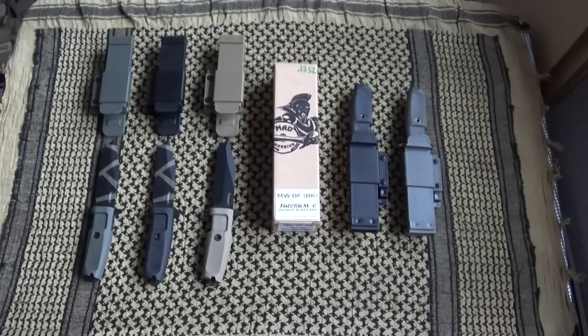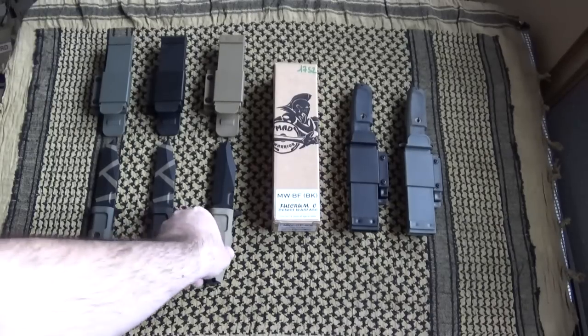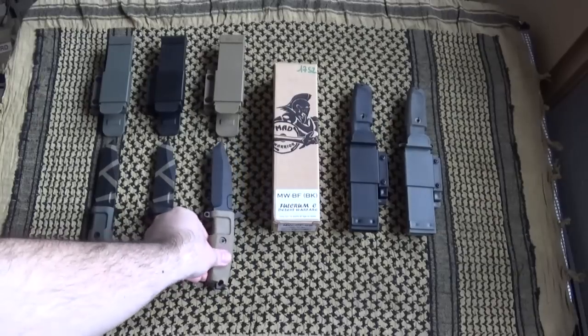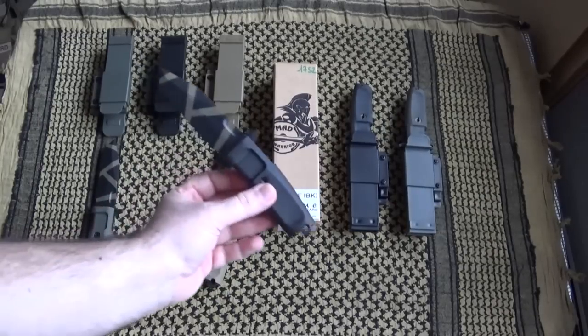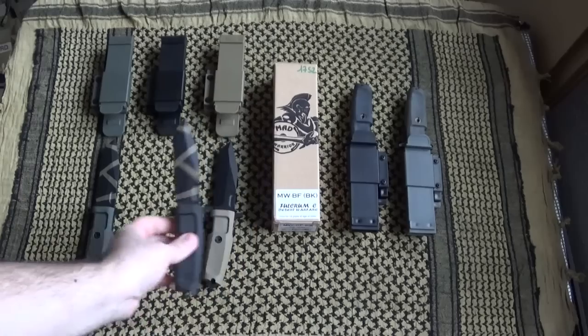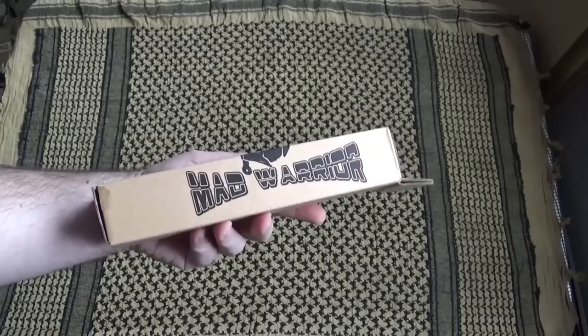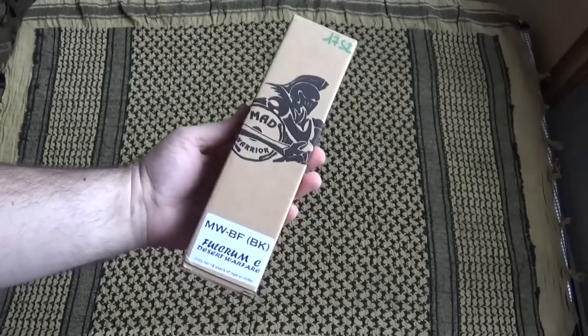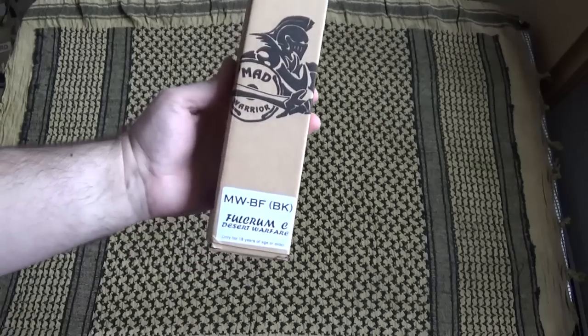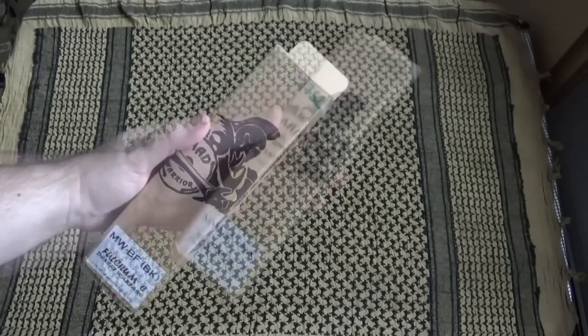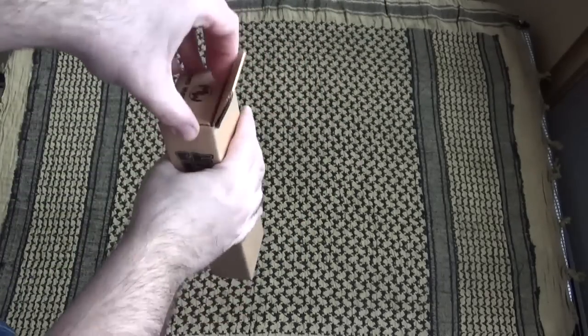There are several models available - three color variants: tan, black, and foliage green, and also a blade variant, either black blade like here or camouflaged blade. For the packaging, it's presented simply in a cardboard box with the manufacturer's logo and here the label representing the model with the nomenclature. The knife replica is simply inside.